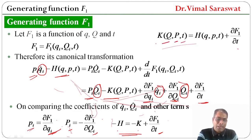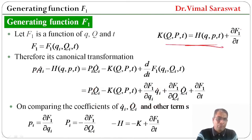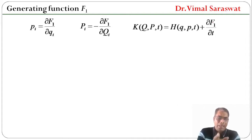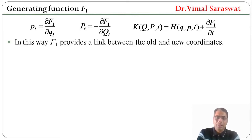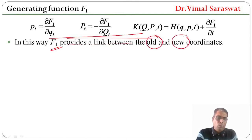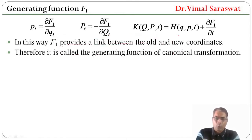From this, capital K equals H plus del F1/del t. K is the function of new coordinate, new momentum, and time; while H is the function of old coordinate, old momentum, and time. So: p_i equals del F1/del q_i, capital P_i equals minus del F1/del Q_i, and K equals H plus del F1/del t. It is clear from these equations that F1 provides a link between the old and new coordinates, and therefore it is called the generating function of canonical transformation.